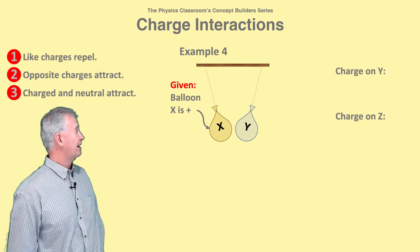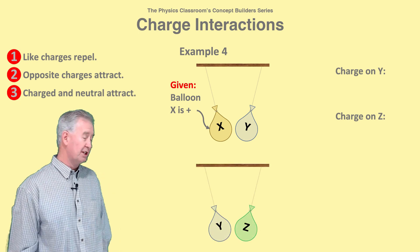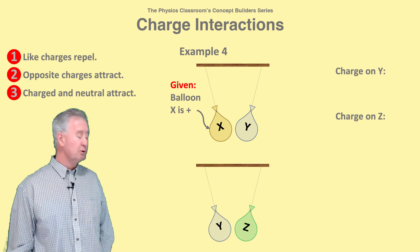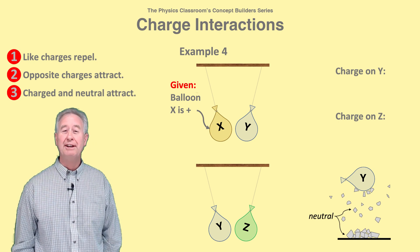In example four, X is positive and X and Y attract. Y and Z also attract, and balloon Y attracts neutral paper bits. That's three Y interactions.